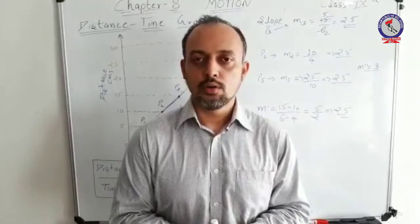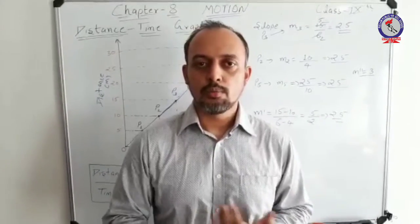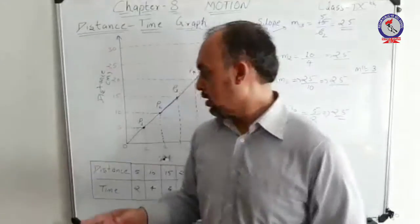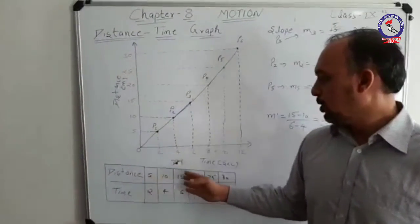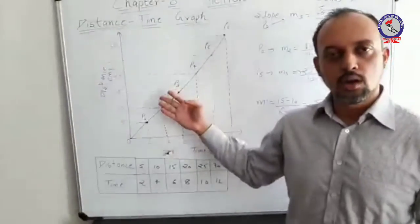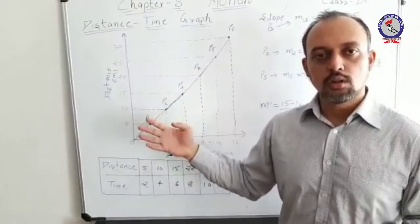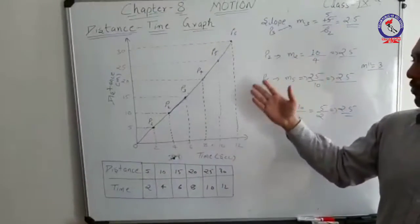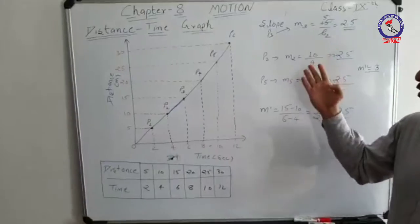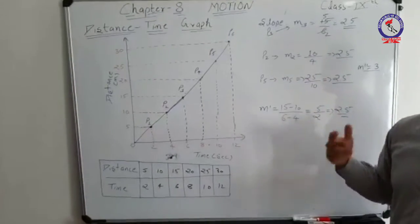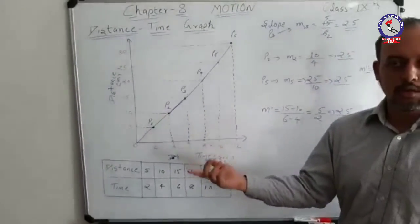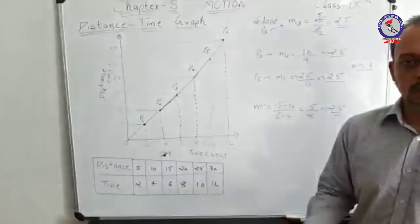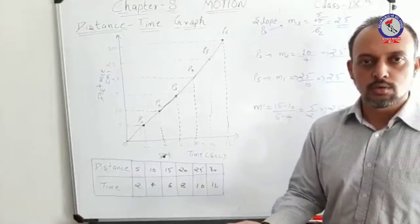I hope you have understood this concept well. You can practice using multiple values — fit in multiple values, plot the graph, and calculate slope at different points. If the slope is the same, represent the motion as uniform; if the slope is different, represent it as non-uniform.